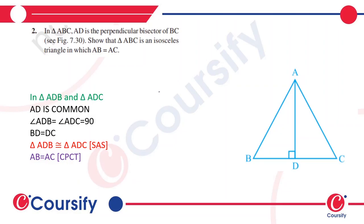In triangle ABC, AD is the perpendicular bisector — meaning this angle is 90 degrees and this side is equal to this side. We need to show that triangle ABC is an isosceles triangle in which AB is equal to AC, so we need to show that these two sides are equal.